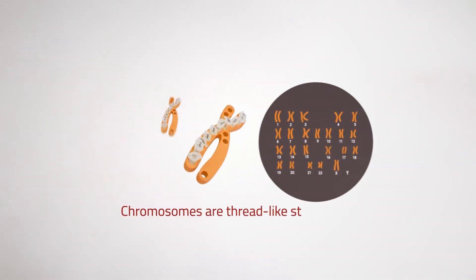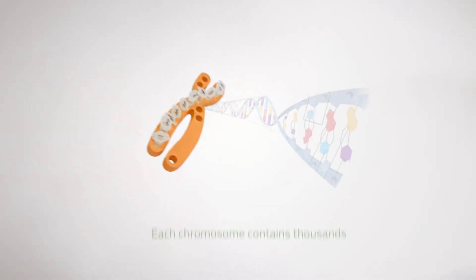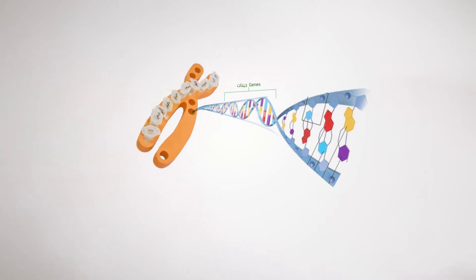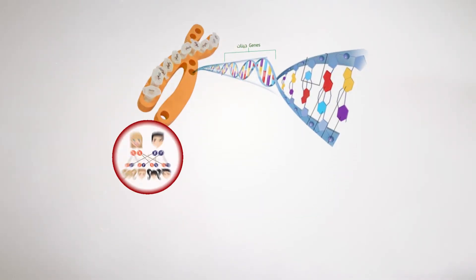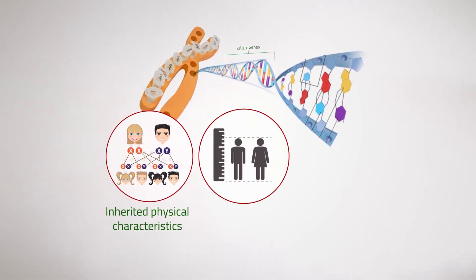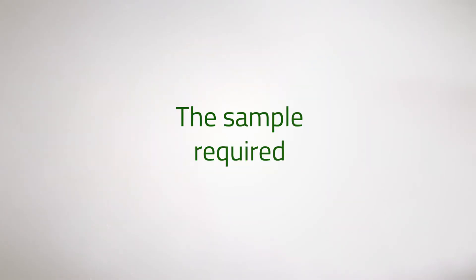Chromosomes are thread-like structures that contain the body's genetic blueprint. Each chromosome contains thousands of genes in specific locations which are responsible for a person's inherited physical characteristics and have a profound impact on growth, development, and function.